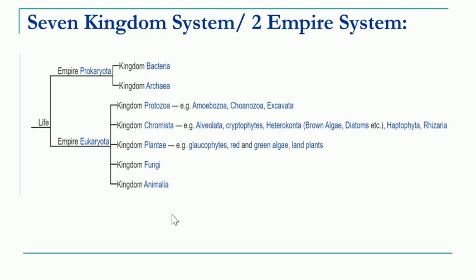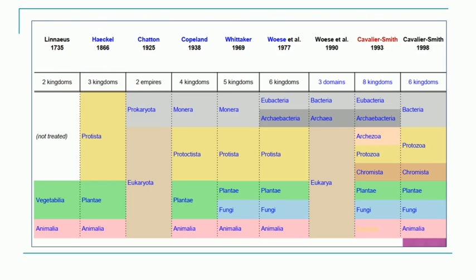In this chart we will compare all the systems of classification proposed over a period of time. We studied the first system proposed by Carlos Linnaeus in the year 1735 — the two-kingdom classification system: kingdom Plantae and kingdom Animalia.